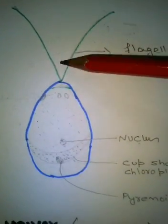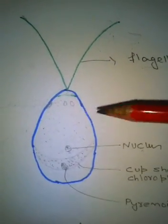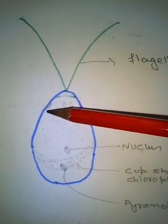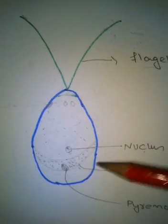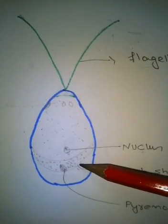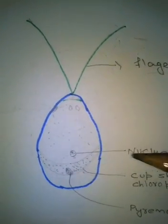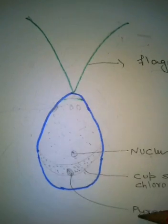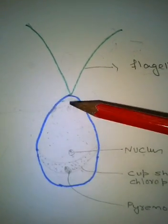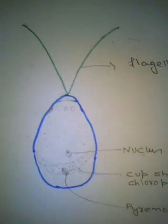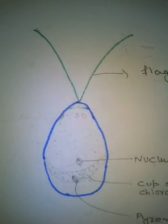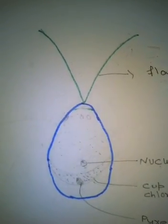Each cell has two flagella, two contractile vacuoles, one eye spot, and one cup-shaped chloroplast with a pyrenoid. The cell structure is similar to Chlamydomonas.